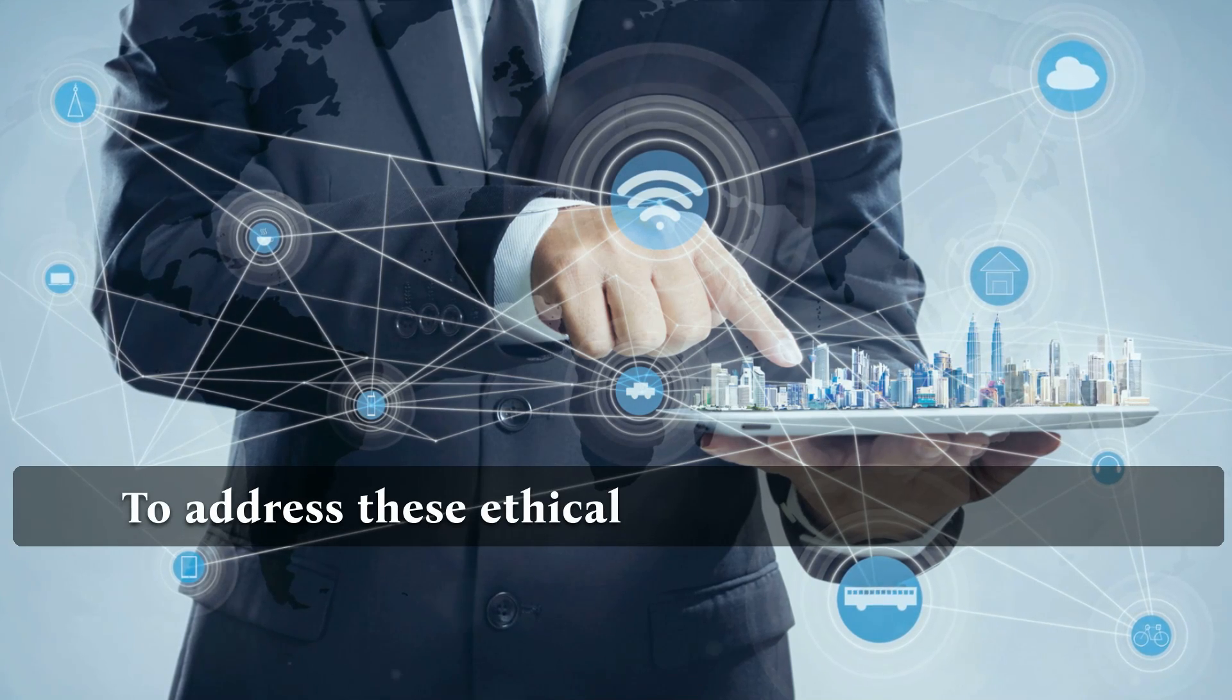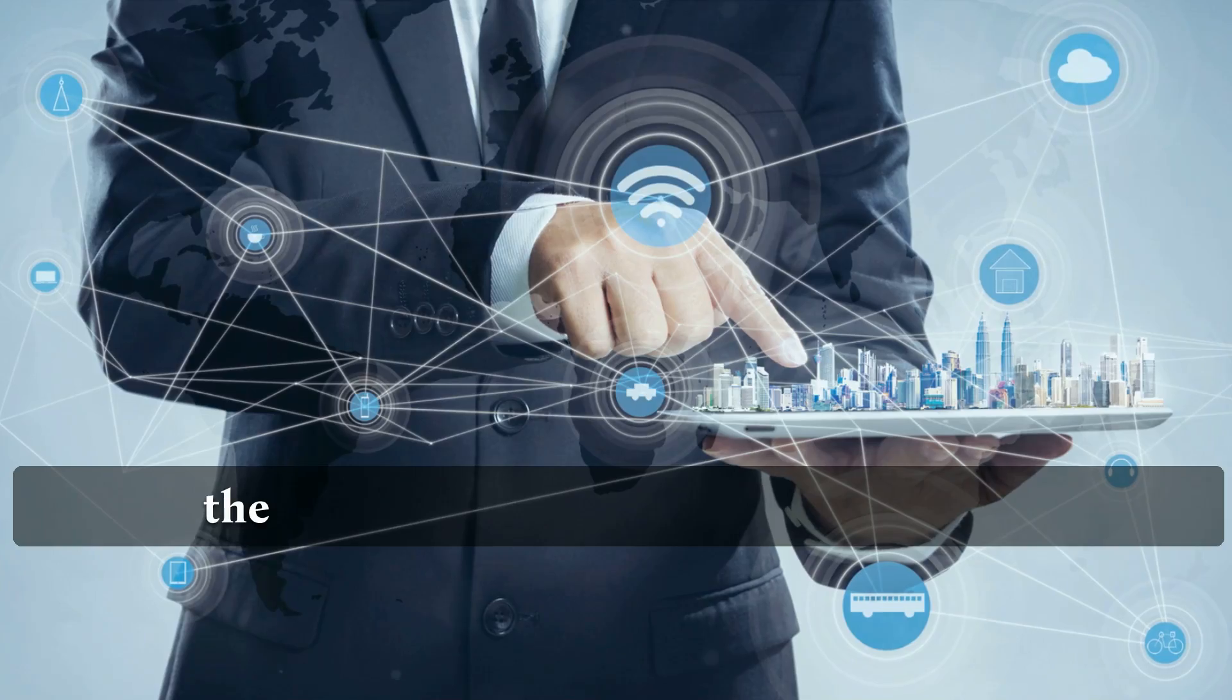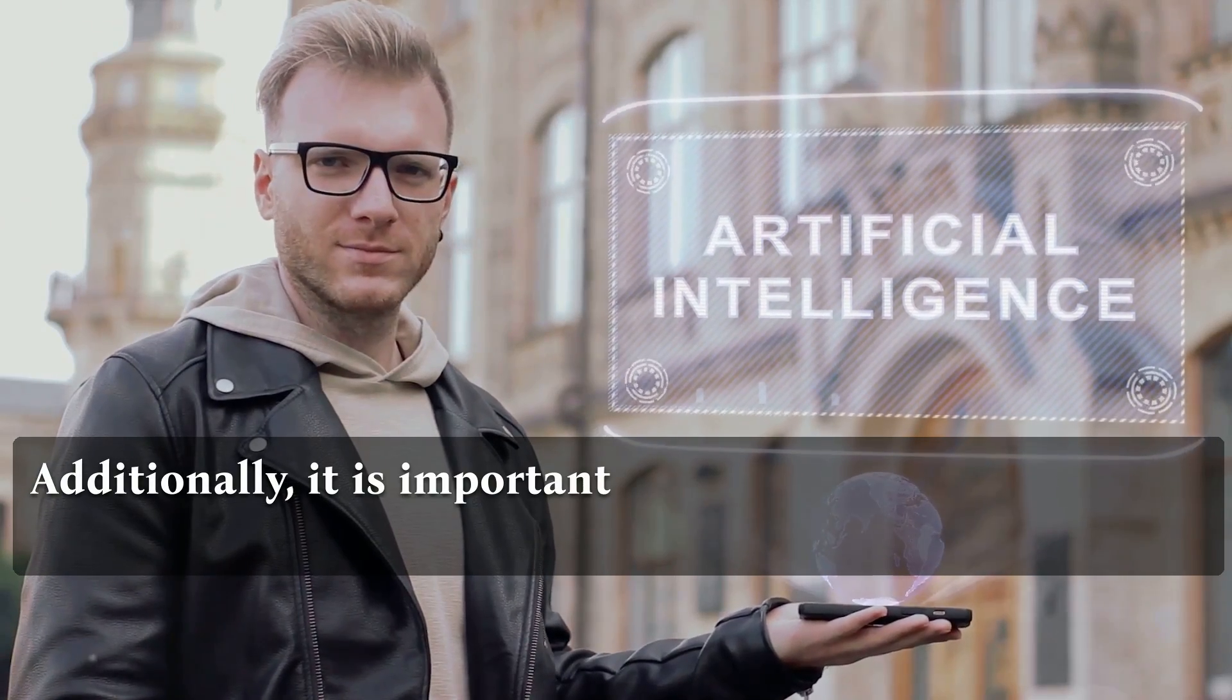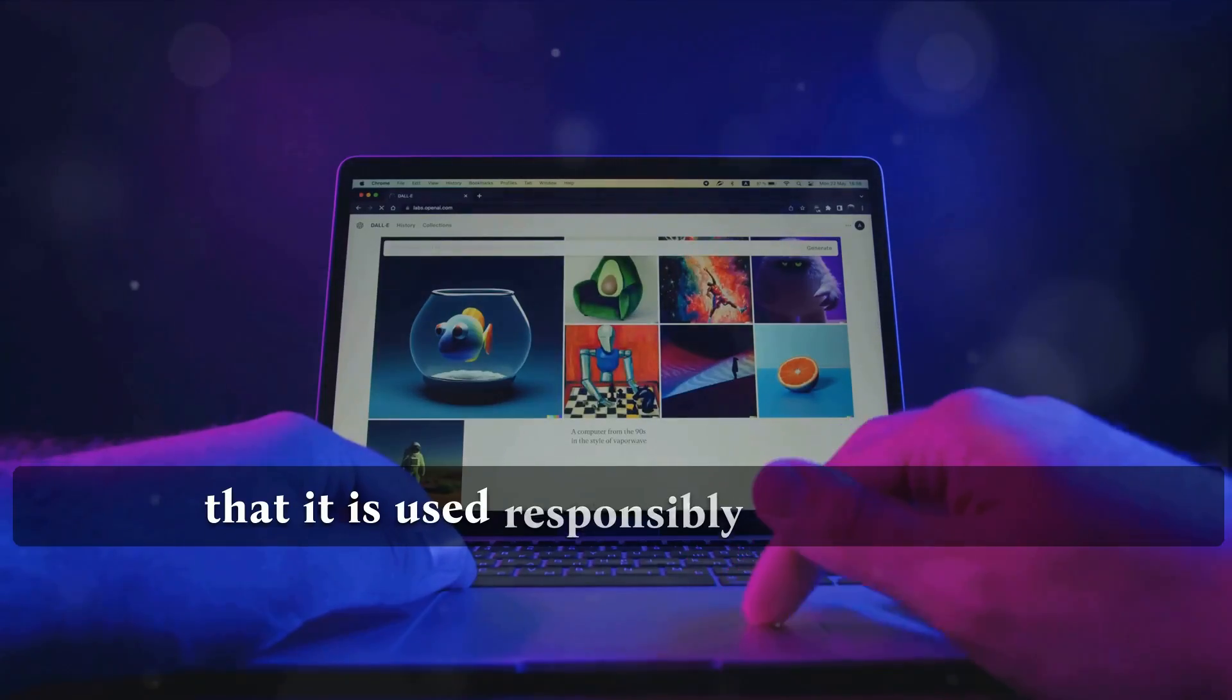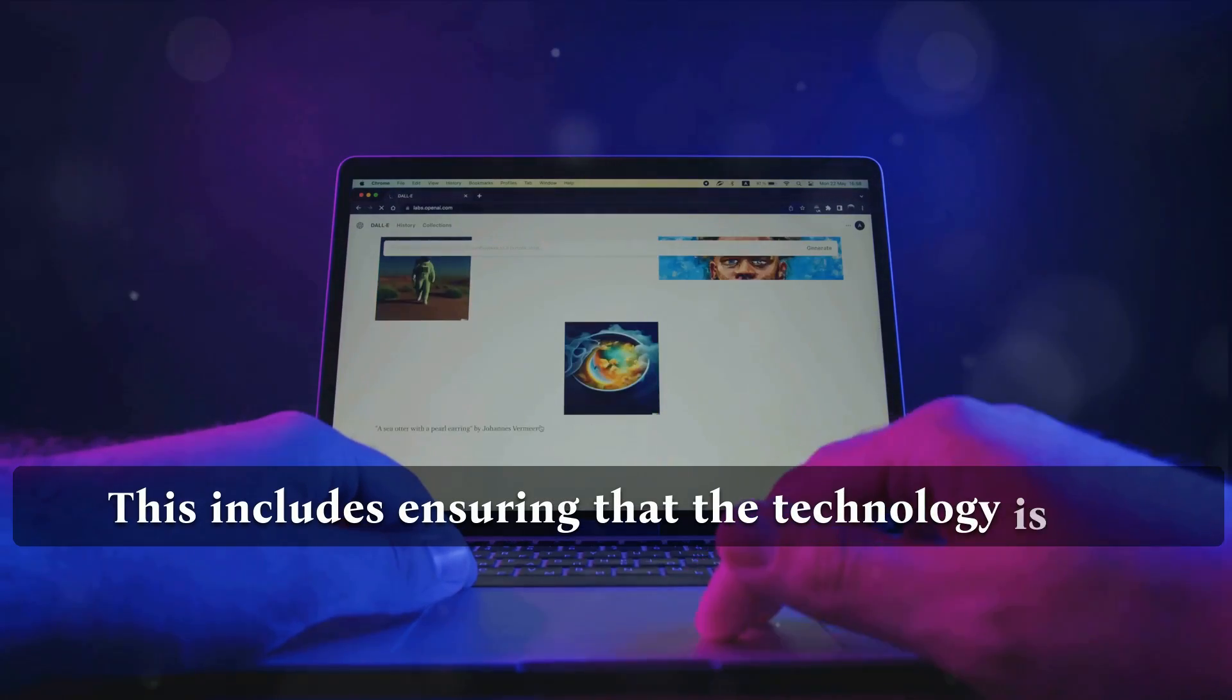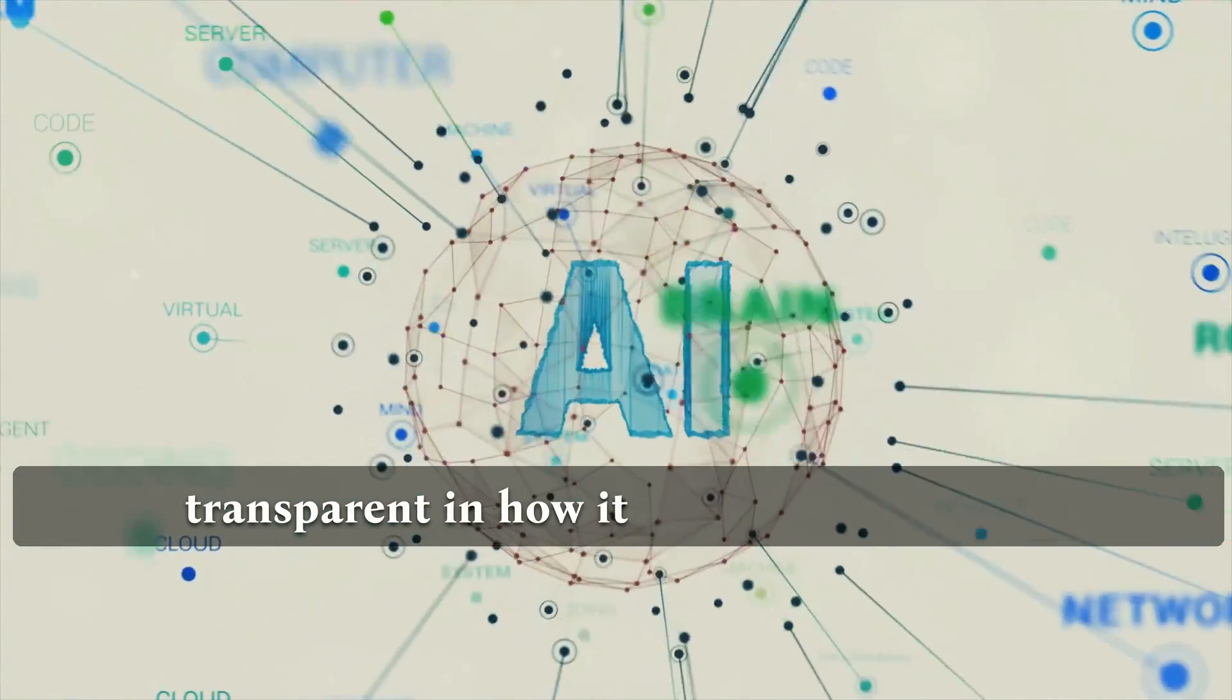To address these ethical concerns, it is essential to ensure that the data used to train the AI models is unbiased and accurate. Additionally, it is important to establish clear guidelines and regulations around the use of generative AI to ensure that it is used responsibly and ethically. This includes ensuring that the technology is not used for malicious purposes and that it is transparent in how it arrives at decisions.